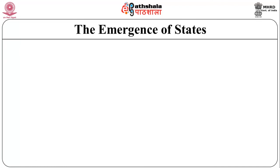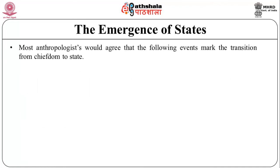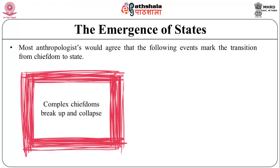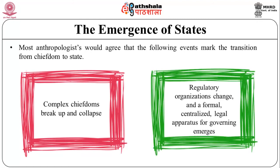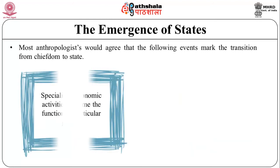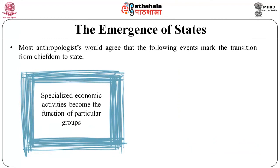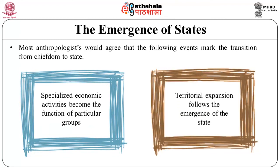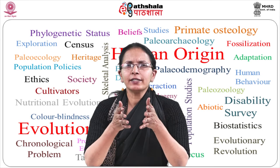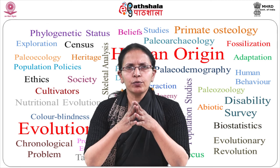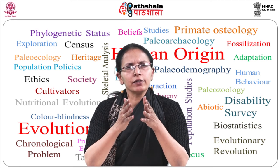Now let's understand the emergence of the state. Most anthropologists would agree that the following events mark the transition from the chiefdom to the state: complex chiefdoms break up and collapse; regular organizational change and a formal centralized legal apparatus for governing emerge; specialized economic activities become the function of particular groups; and territorial expansion follows the emergence of the state.